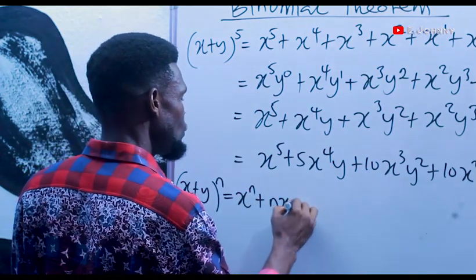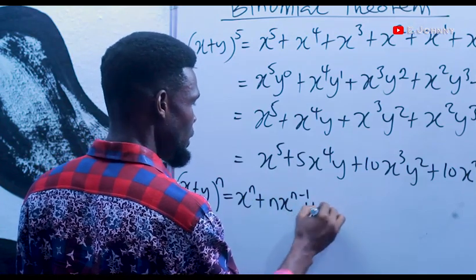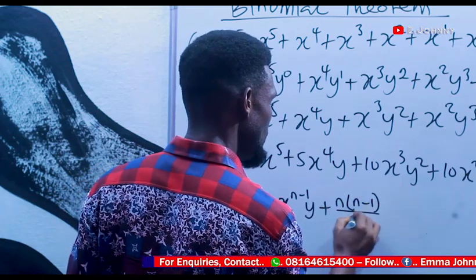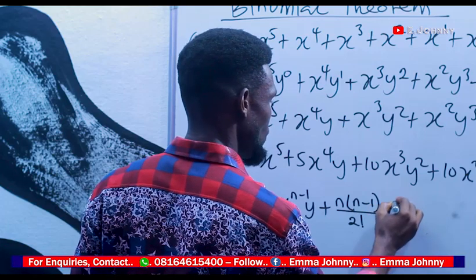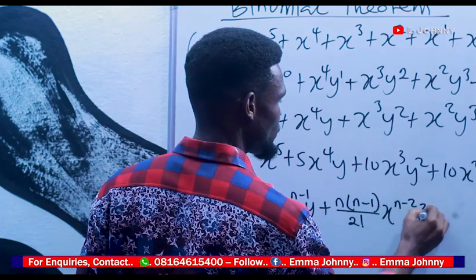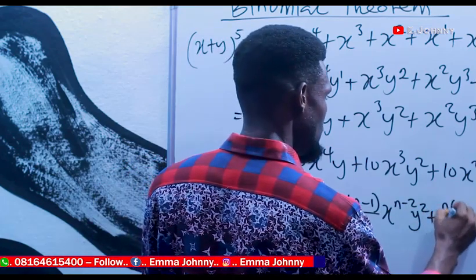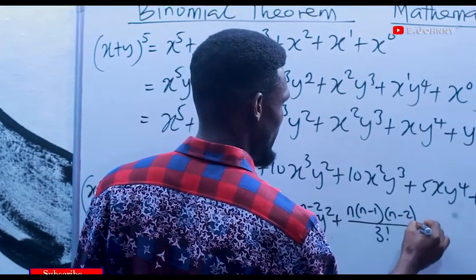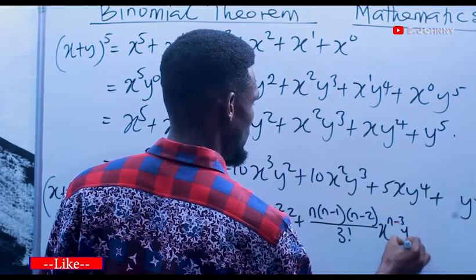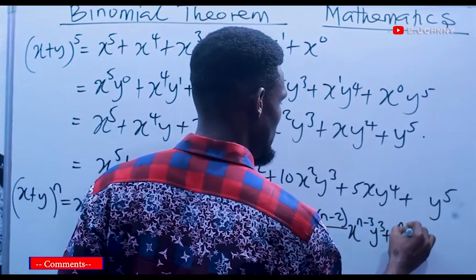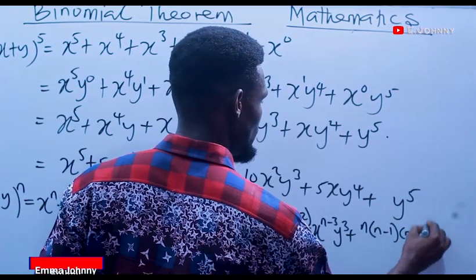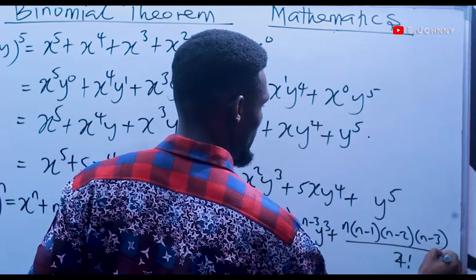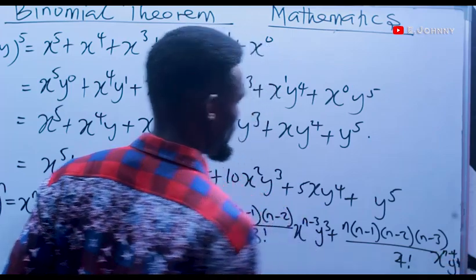...plus n·x to the power (n−1)·y, plus [n(n−1) / 2!]·x to the power (n−2)·y squared, plus [n(n−1)(n−2) / 3!]·x to the power (n−3)·y cubed, plus [n(n−1)(n−2)(n−3) / 4!]·x to the power (n−4)·y to the power 4.